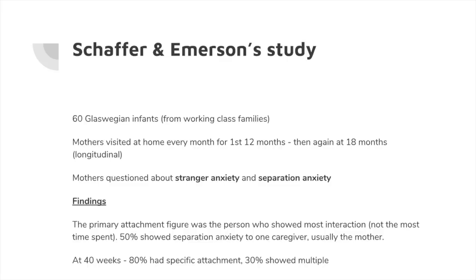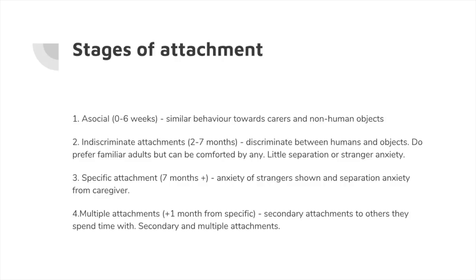At 40 weeks, 80% had one specific attachment and 30% showed multiple attachments. This suggests that we gain one key attachment first, and then multiple attachments follow afterwards. Based on the findings, Schaffer and Emerson came up with four stages of attachment.